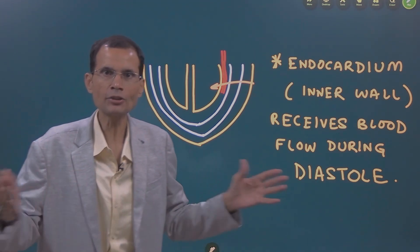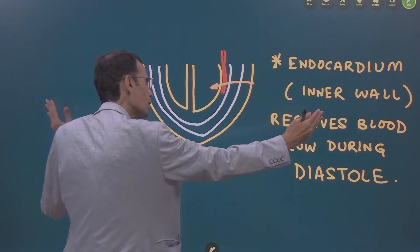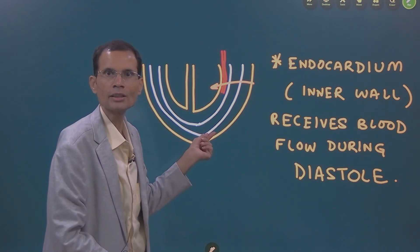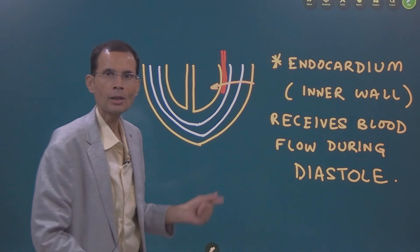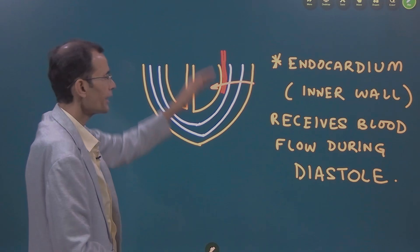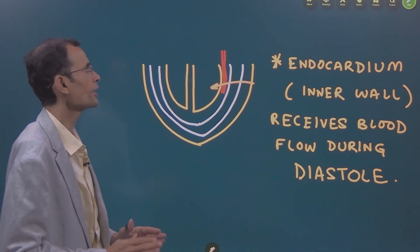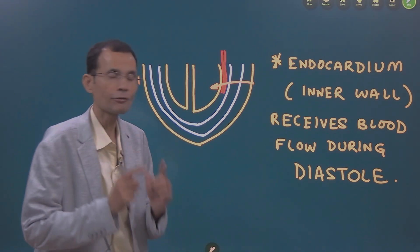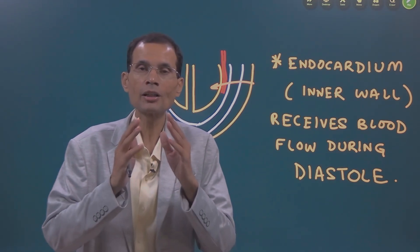But when the heart goes in diastole, it expands outward. The vessels will open up because there is no pressure on the inner wall. So, vessel will open up and there is blood flow in the inner wall or inner layer or endocardium. So, the first point is endocardium or inner wall of the heart receives blood flow during ventricular diastole.